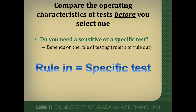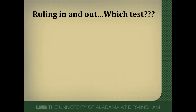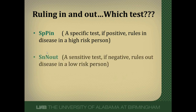When we want to rule in disease, we use a specific test. When we want to rule out disease, we choose the most sensitive test. A good way to remember this is the mnemonic SPIN and SNOUT. SPIN means a specific test, if positive, rules in disease. SNOUT means a sensitive test, if negative, rules out disease. Specific tests are used to rule in disease when patients are at high pretest probability. Sensitive tests are used to rule out disease when patients are at low pretest probability.